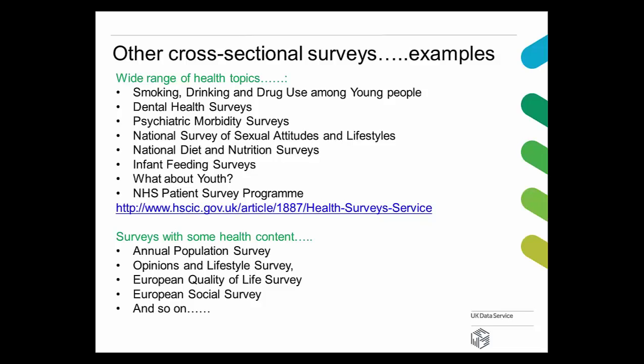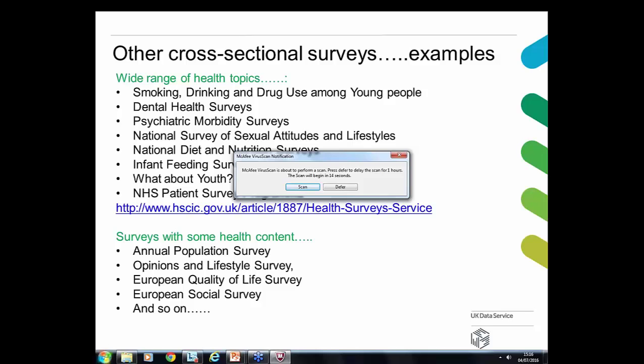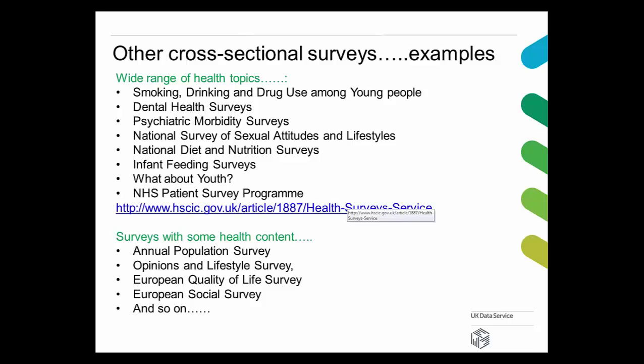There are also cross-national surveys with health content. An example is the European Quality of Life Survey, carried out every four years, including 30 countries including the UK, with a target of 1,000 people per country. It examines a range of issues — socioeconomic position, employment, income, education, housing, health, work-life balance, and life satisfaction. The health element covers general health, long-standing illness, visits to doctors, and satisfaction with health — useful if you want to make comparisons between countries.